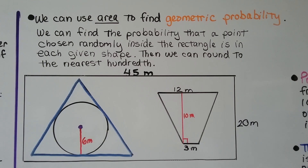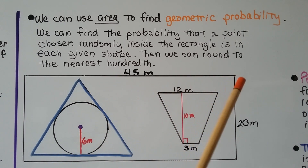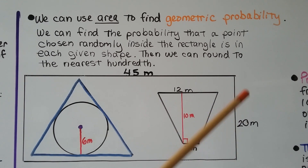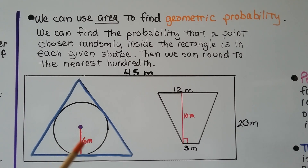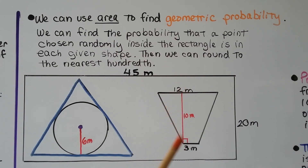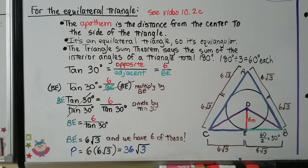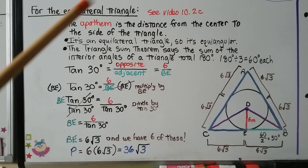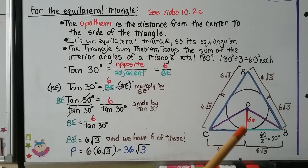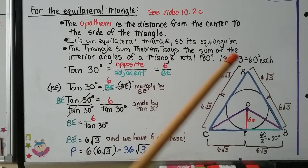We can use area to find geometric probability. We find the probability that a point chosen randomly inside the rectangle is in each given shape, rounding to the nearest hundredth. The rectangle is 45 meters across and 20 meters wide. The equilateral triangle has an apothem of 6 meters, which is also the radius of the inscribed circle. We learned this method in video 10.2c.